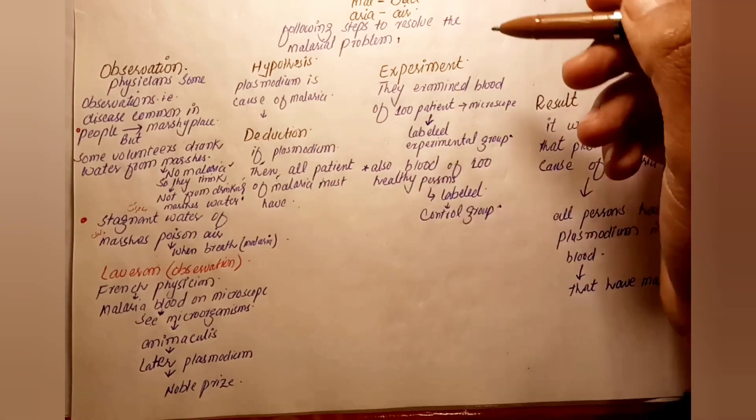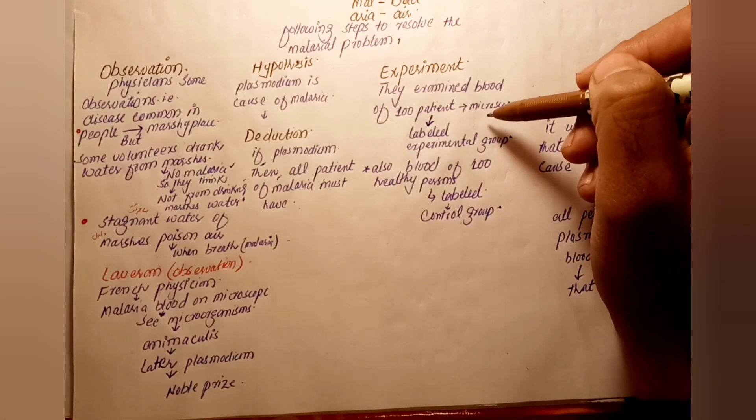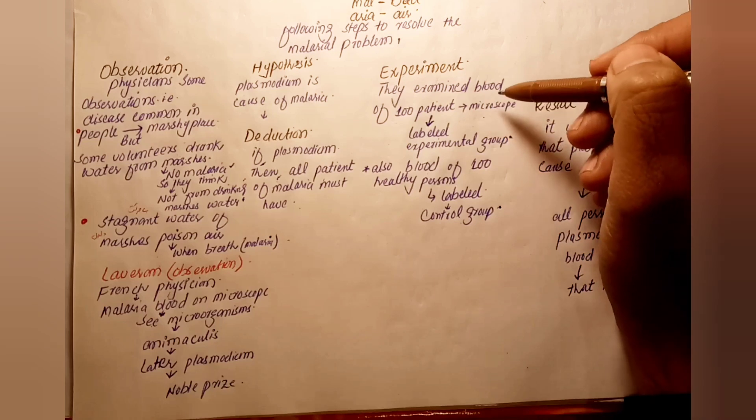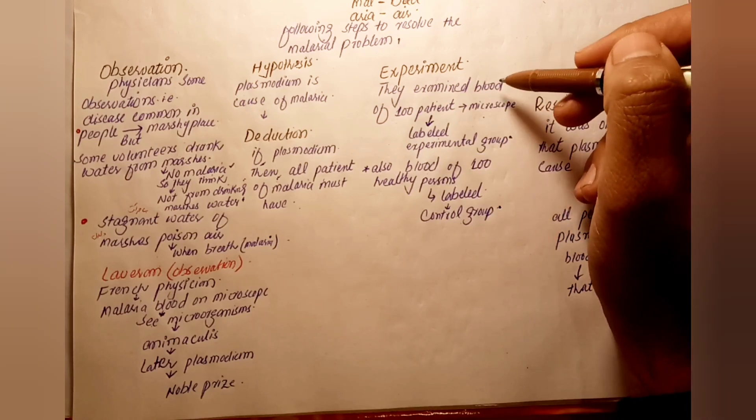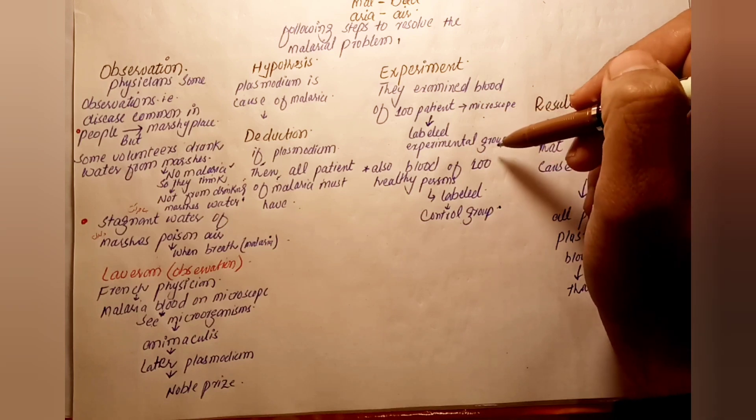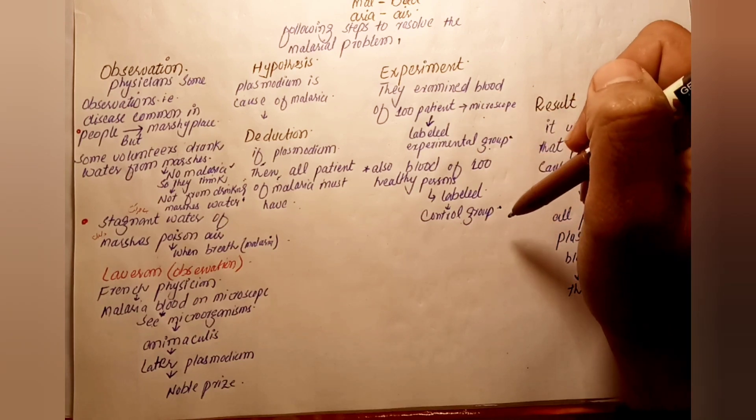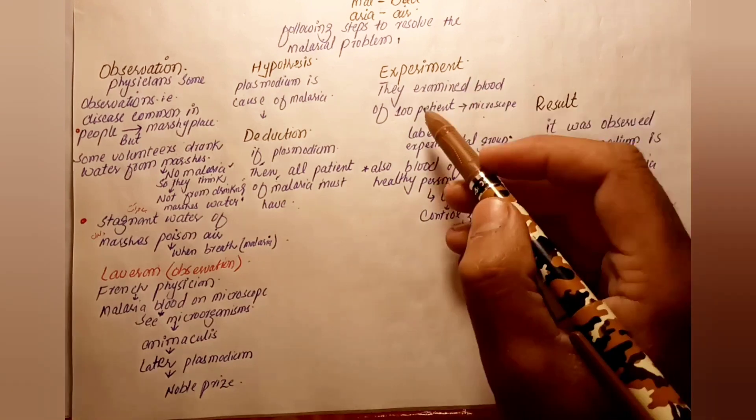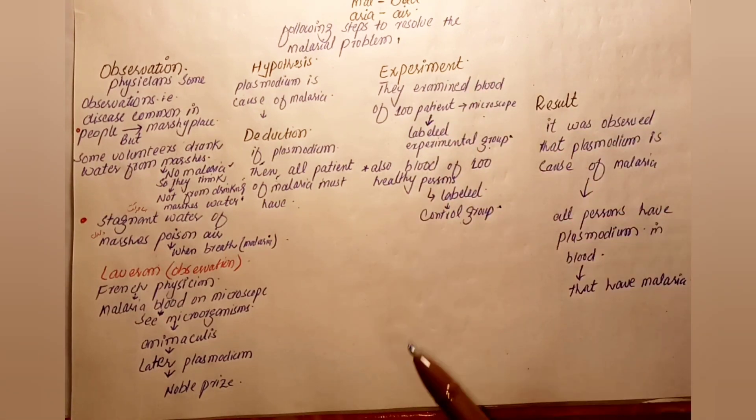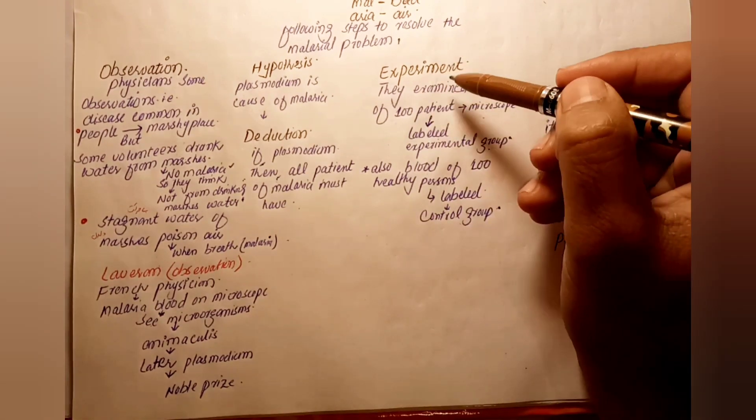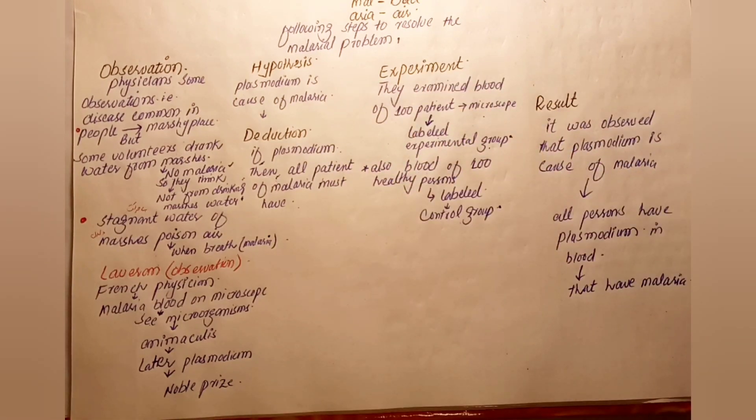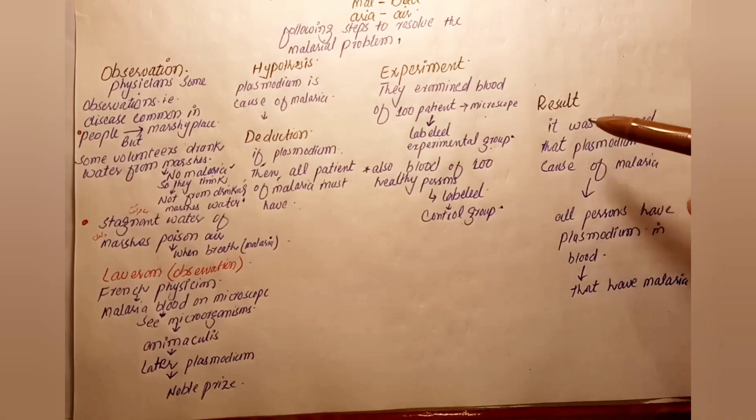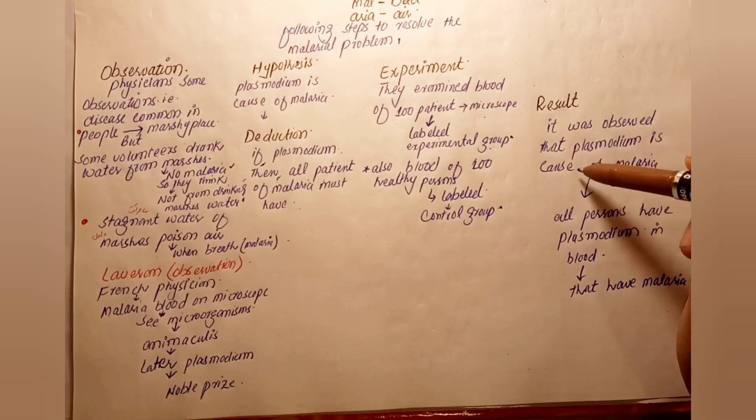The result showed that all malaria patients had Plasmodium in their blood. The experimental group, consisting of malaria patients examined under microscope, all showed Plasmodium infection. It was confirmed that Plasmodium is the cause of malaria.